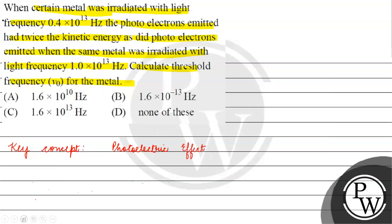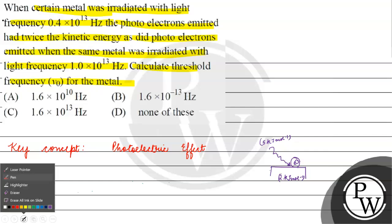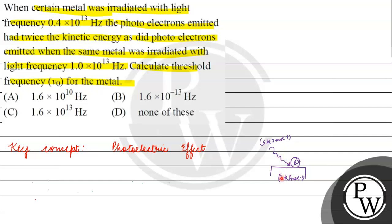Let's look at the photoelectric effect. We have a metal surface. We put radiation on it — suppose the radiation energy is 5 kJ per mole. This is the surface, this is the electron. The electron is emitted in the form of kinetic energy. So, radiation strikes the metal surface. If it has enough energy, it will eject the electron, and if it has more energy, the extra becomes kinetic energy. So: H×μ = H×μ₀ + Kinetic Energy.